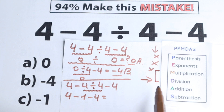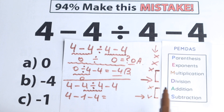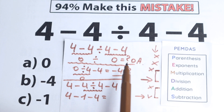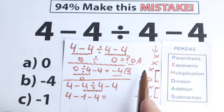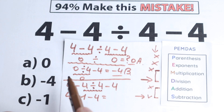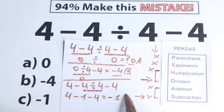Addition and subtraction is our last step. We have subtraction signs. Division is always before subtraction — you always divide first, then subtract, or multiply first, then add. This is a very important math rule. So: 4 minus 1 equals 3, then 3 minus 4 equals minus 1, which is option C.